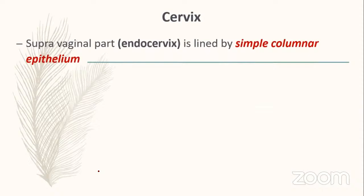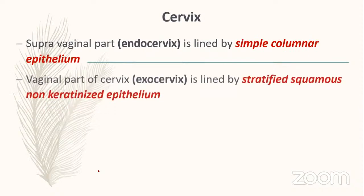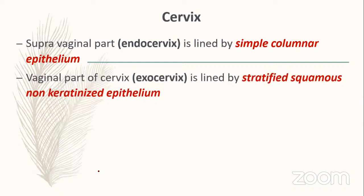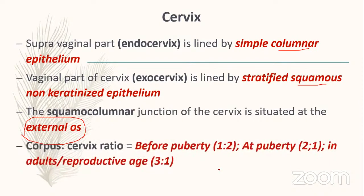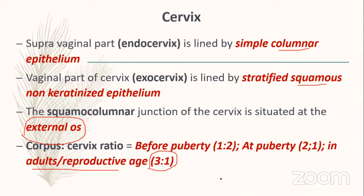Cervix: the supravaginal part (endocervix) is lined by simple columnar epithelium; the vaginal part (ectocervix) is lined by stratified squamous non-keratinized epithelium. The squamocolumnar junction is situated at the external os. The corpus-to-cervix ratio: before puberty it is 1:2; at puberty it becomes 2:1; in reproductive age it becomes 3:1. Cervix is the most fixed part of the uterus.